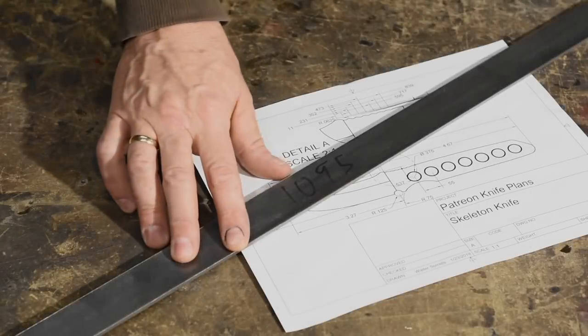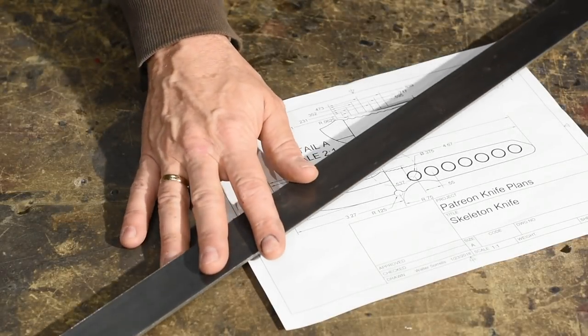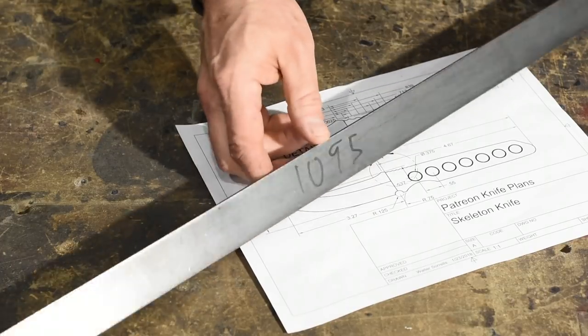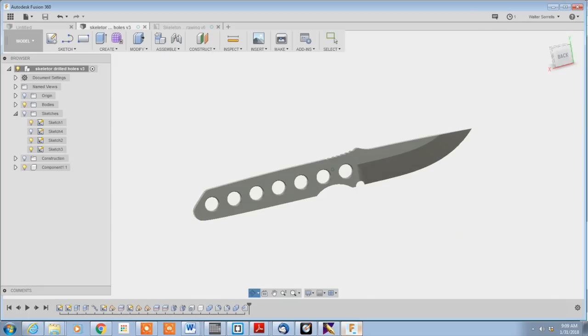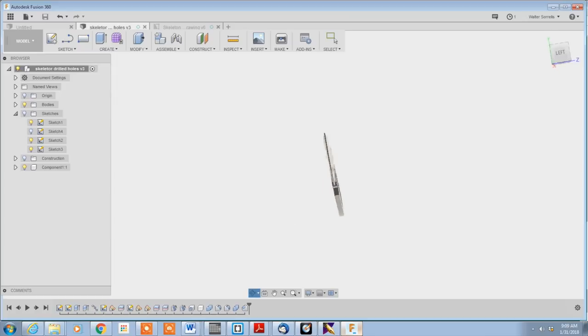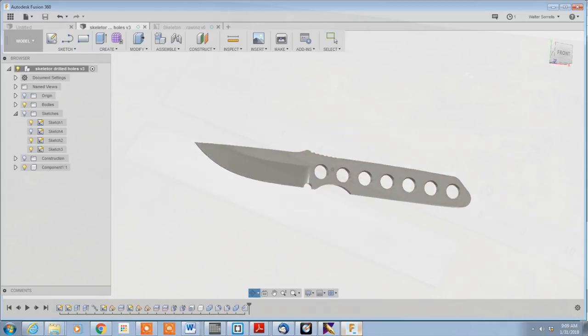Let's get started. Here's what this project requires in the way of material. Steel. Period. It's a skeleton knife, meaning it has no handle scales, no bolsters, no pins, no guard, no nothing.